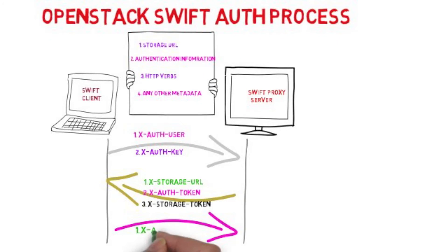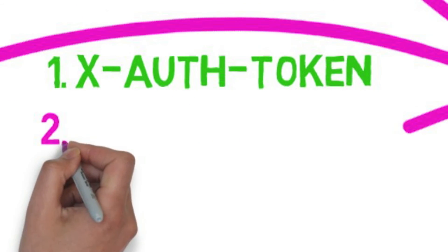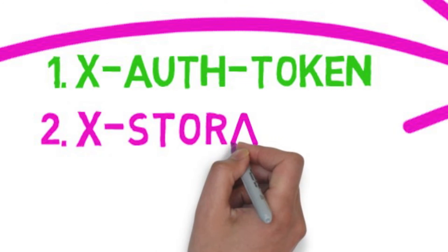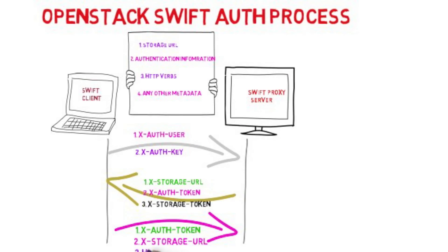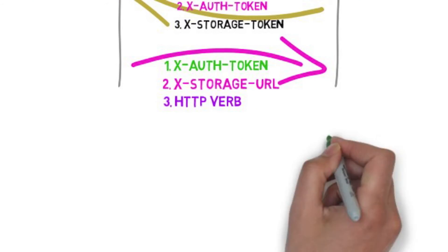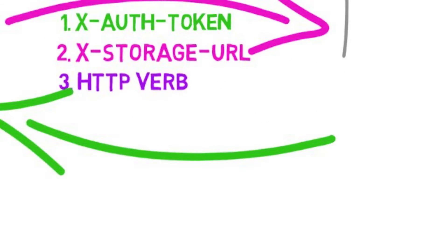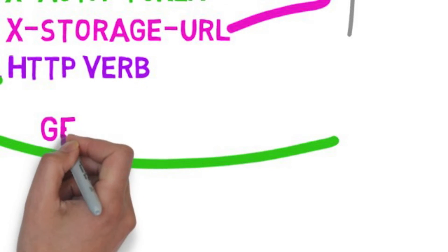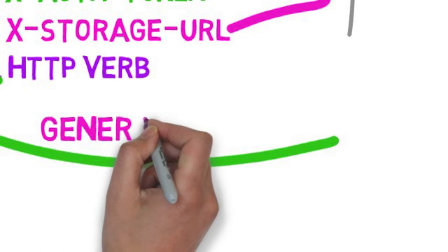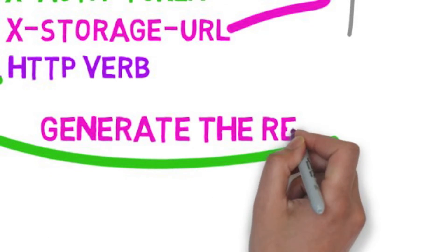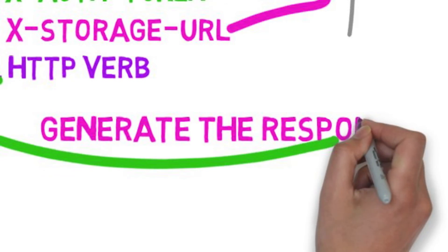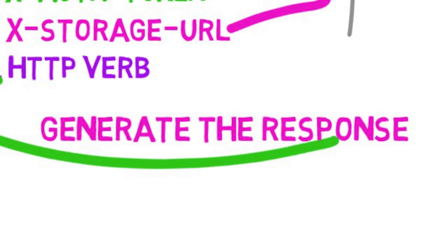The client will use the x-auth-token and x-auth-storage-URL to perform the HTTP verbs operation. Finally, based on the HTTP verb, the Swift Proxy will generate the response.